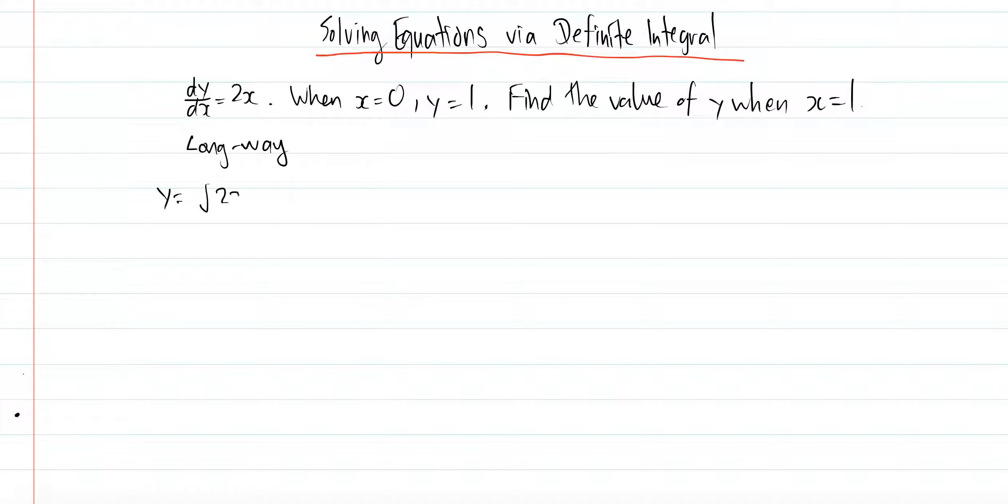This is the normal way which most students would do. dy/dx equals 2x, so y equals the anti-derivative of 2x, and you just get x squared plus C. If you want to find C, you sub in this point right here.